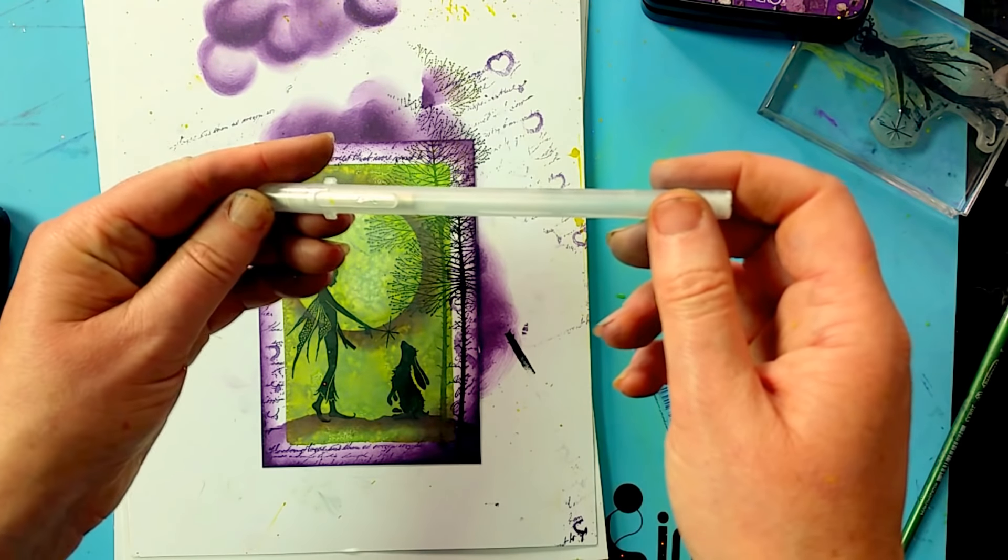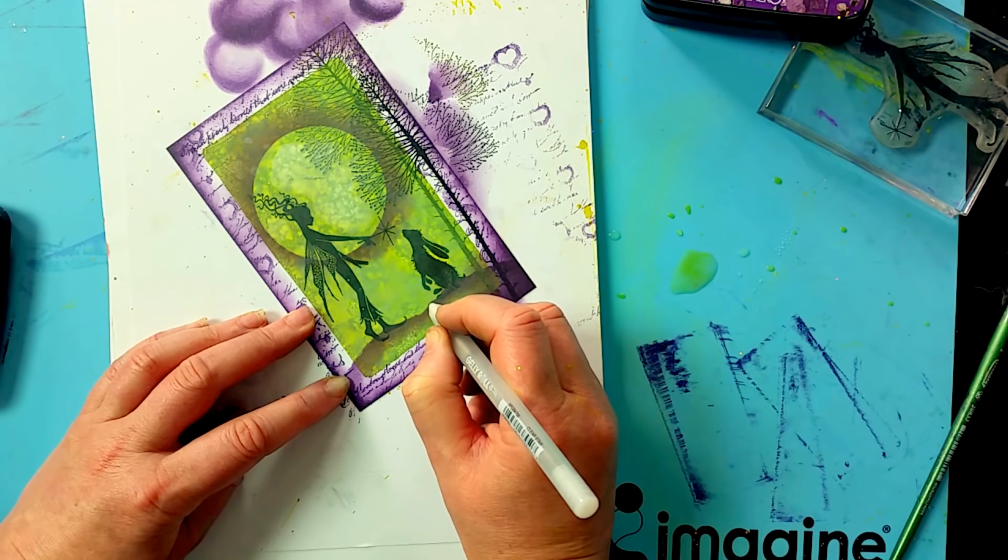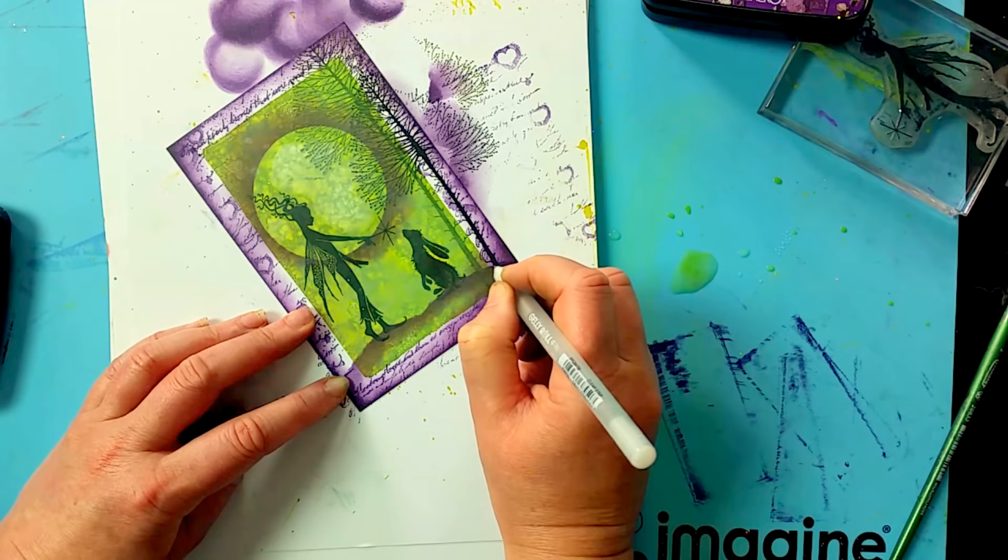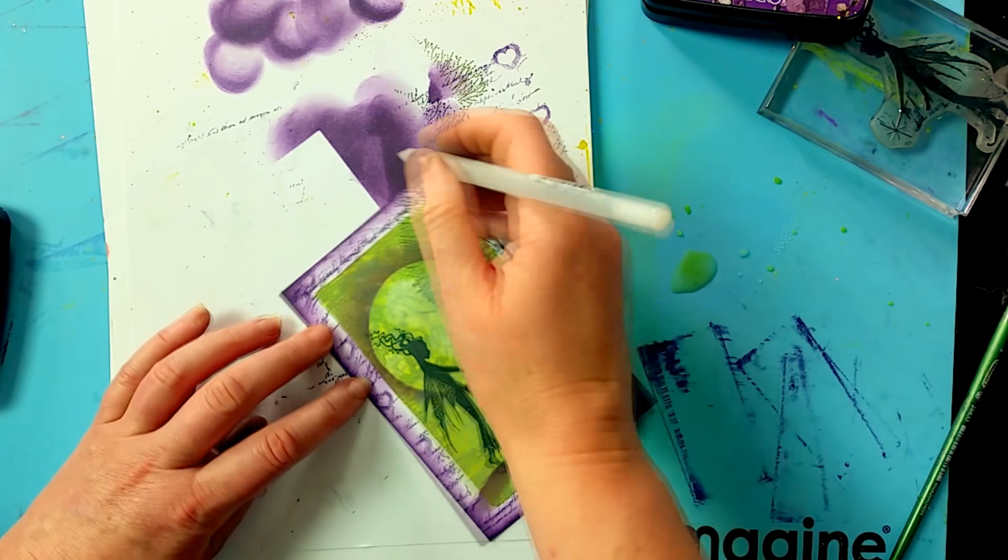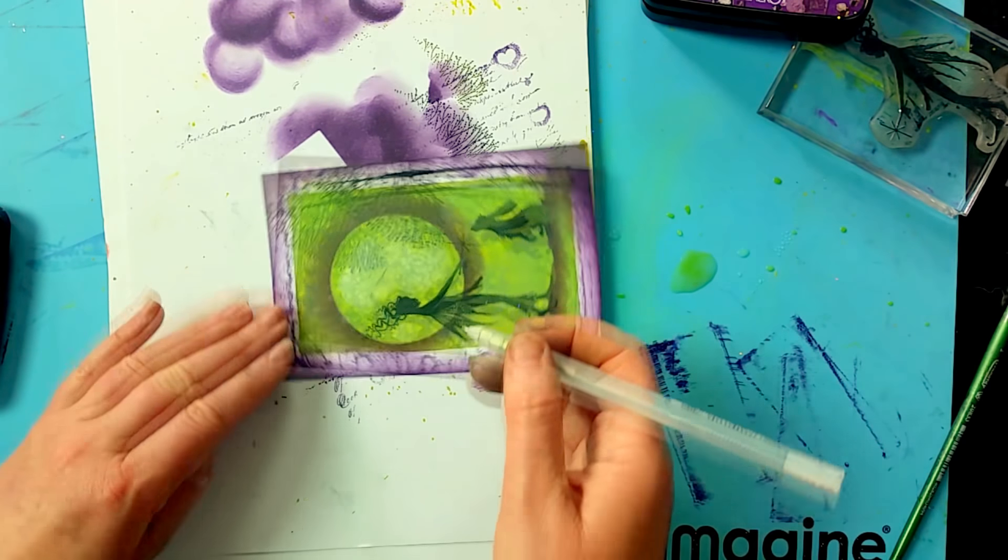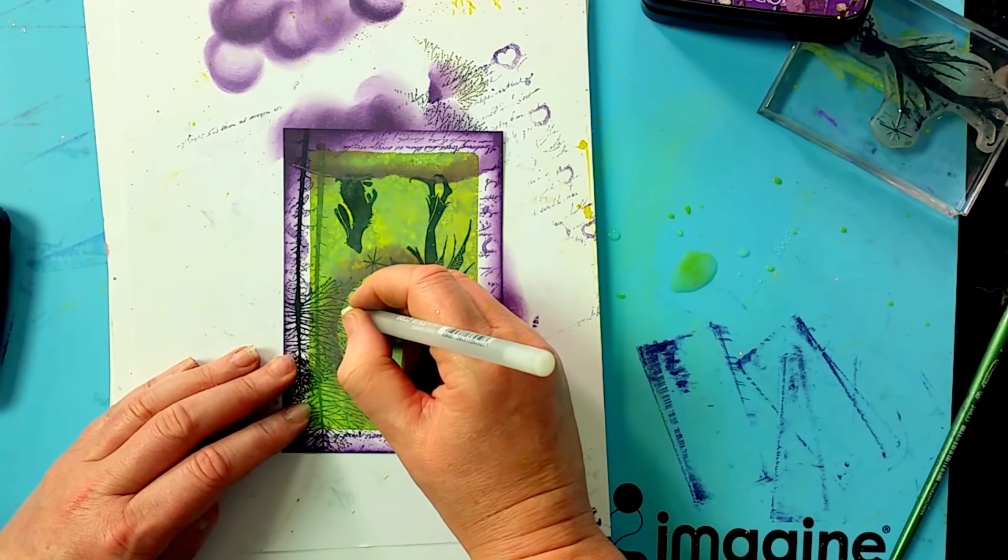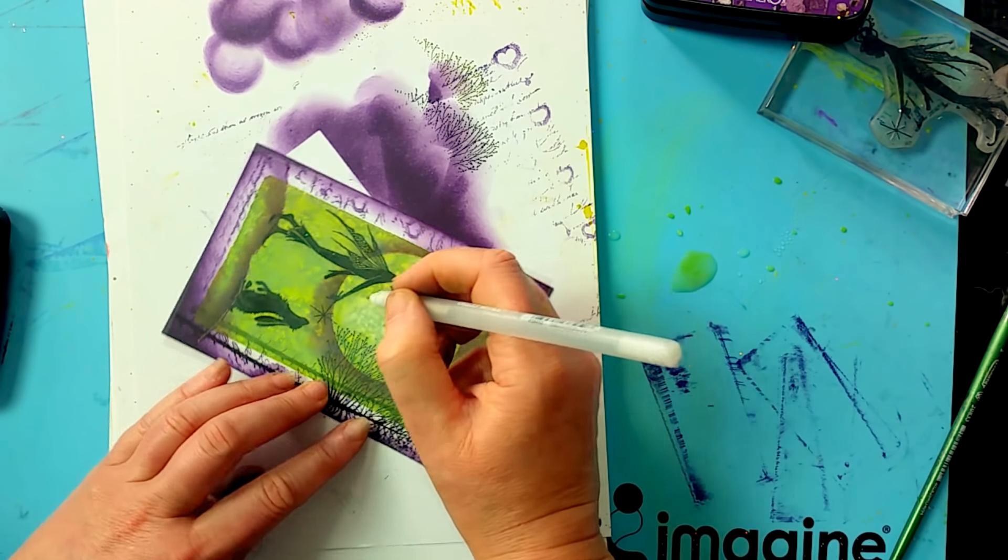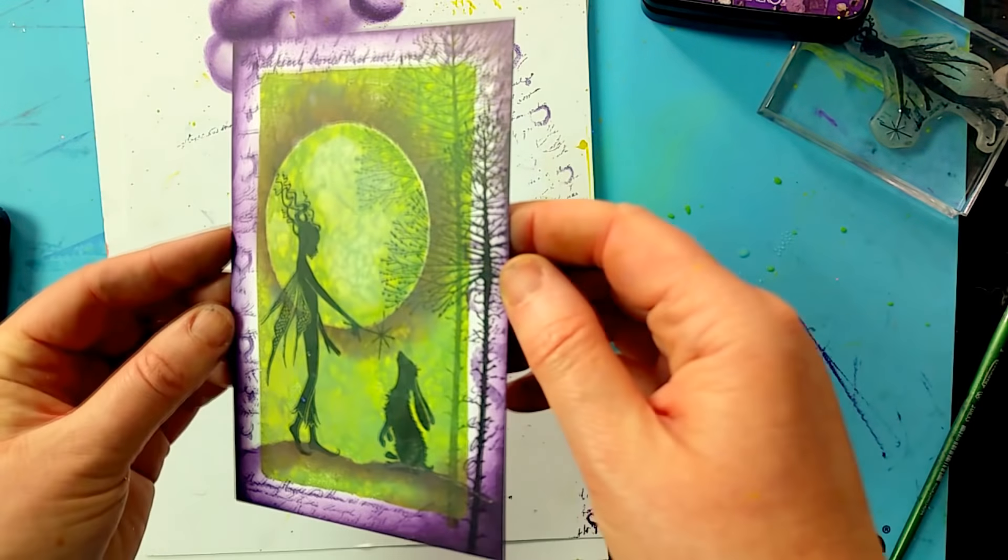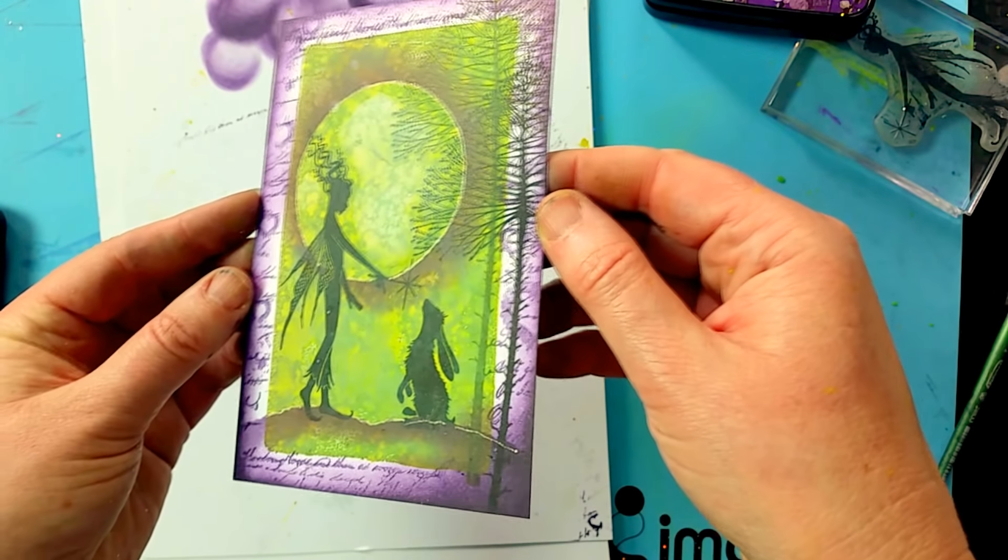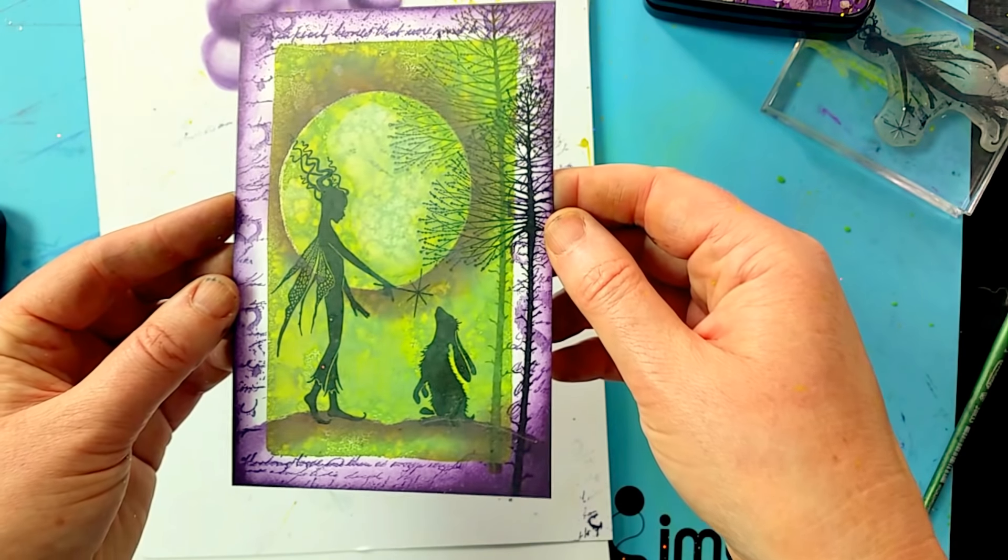Taking the glitter pen now, our Gelly Roll glitter pen, I'm just going to go over the edge of the ground and around the edge of the moon, which looks fabulous. I know you can't see that at the moment, I'll try and show you in a minute. Can you see that now? See how that glitter pen just adds that little bit of sparkle, that little bit of detail, and it just looks fab.